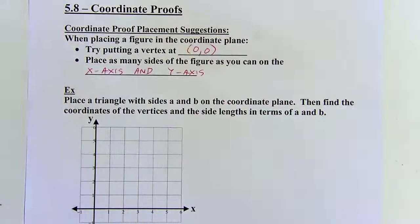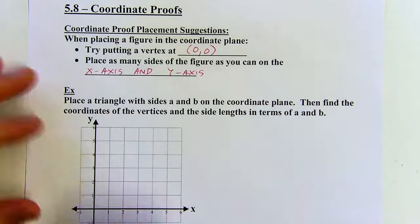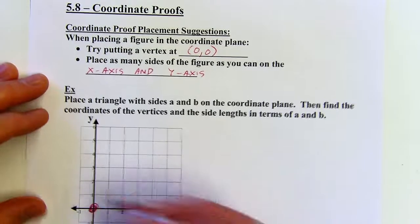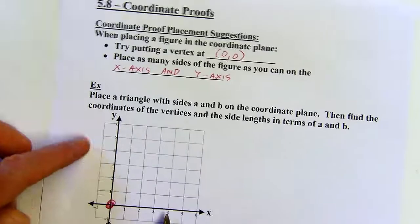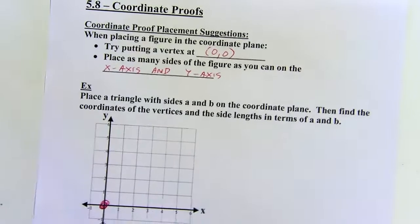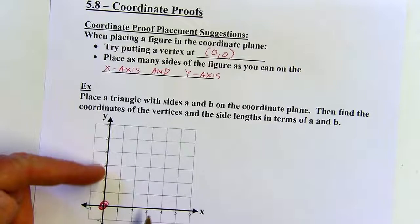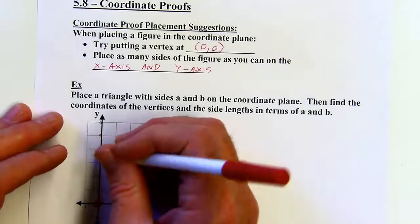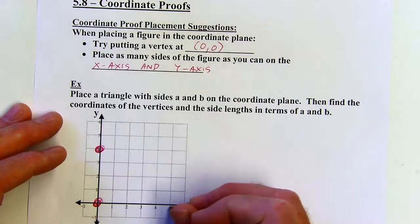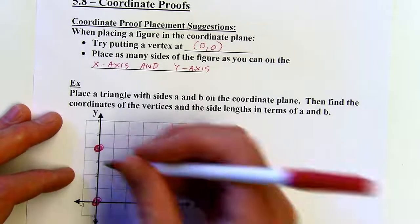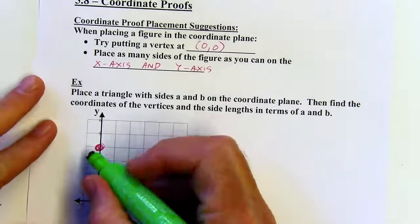On this first example, we're going to place a triangle with sides A and B on the coordinate plane. I've got a triangle — I'm going to put one of my corners at the origin, and then I'm going to have two of my sides be on the x and y-axes. I can put the points wherever I want on these axes. It's going to make things much easier. So I'll put them there and there, and then I'll draw my triangle in here.